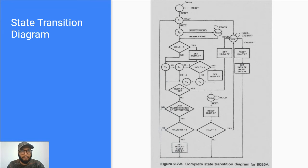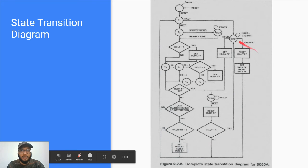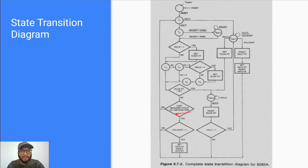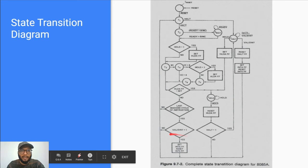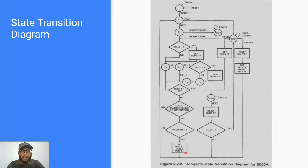Looking at the state transition diagram, after executing each instruction — T1, T2, T3, T4 — the processor checks whether it is the last machine cycle of the instruction. If yes, the processor automatically checks (built in as part of the hardware) whether there is a valid interrupt. If there is a valid interrupt, it sends an active-low interrupt acknowledged signal, then the processor status is saved and execution jumps to the interrupt service subroutine (ISS).